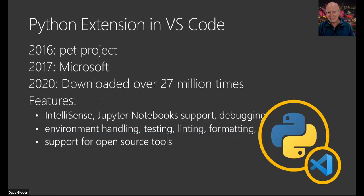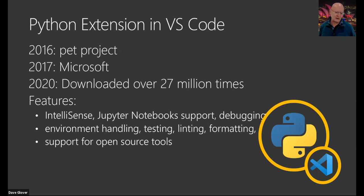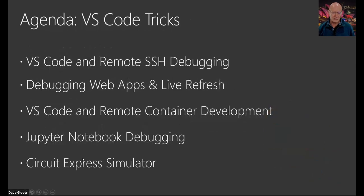One of the most popular extensions for Visual Studio Code is the Python extension. Just to give you a sense of where the Python extension started: it actually started as a pet project back in 2016, was acquired by Microsoft in 2017, and today it's been downloaded something like 27 million times. It's an extremely popular extension with features like IntelliSense — using machine learning models to improve productivity — plus support for Jupyter Notebooks, debugging, environment handling, testing, linting, and formatting.